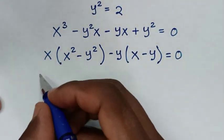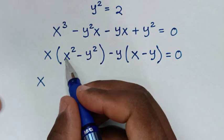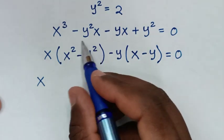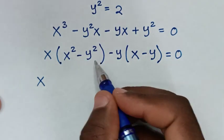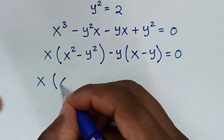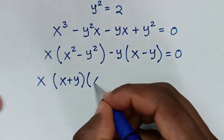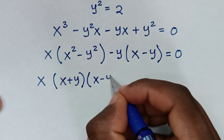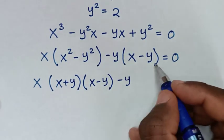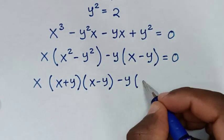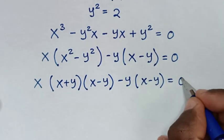In the next step, x² minus y² is a difference of squares, which equals (x plus y)(x minus y). So the expression becomes x(x plus y)(x minus y) minus y(x minus y) equals 0.